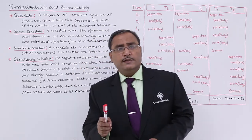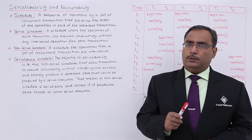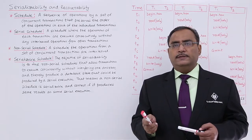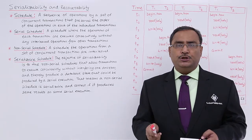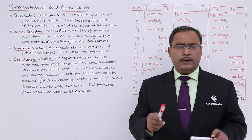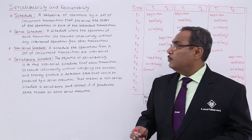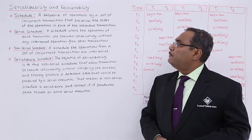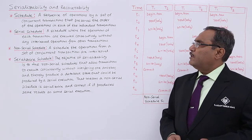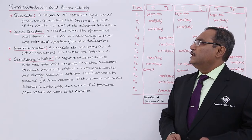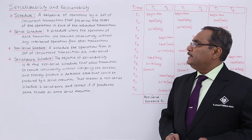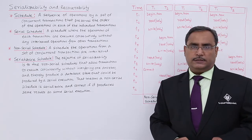At first, let us define a schedule, then we shall go for what is a serial schedule, serializable schedule, non-serial schedule, and so many other things. A schedule is a sequence of operations by a set of concurrent transactions that preserves the order of operations in each of the individual transactions.